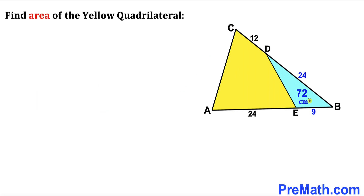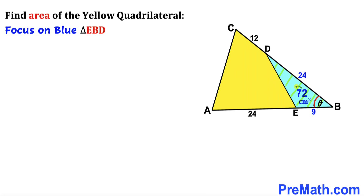Here's our very first step. Let me go ahead and call angle ABC as our angle theta. Now let's focus on the blue triangle EBD, whose area is 72 and whose side lengths are 24 and 9.